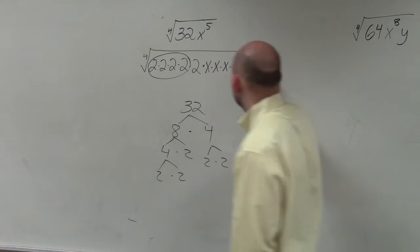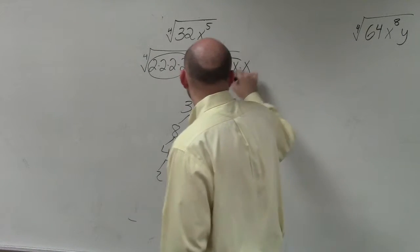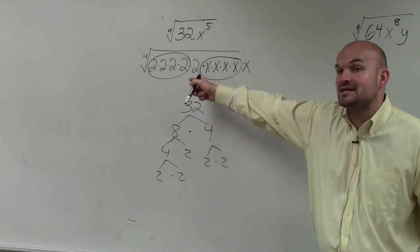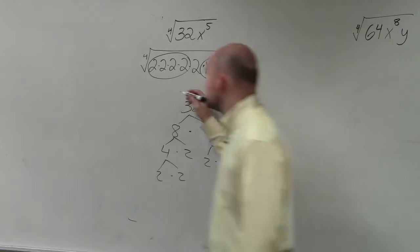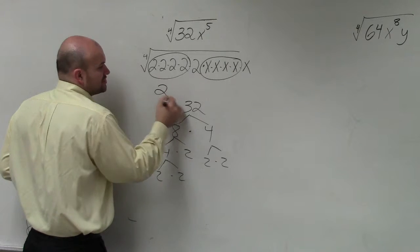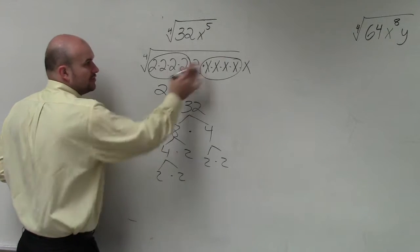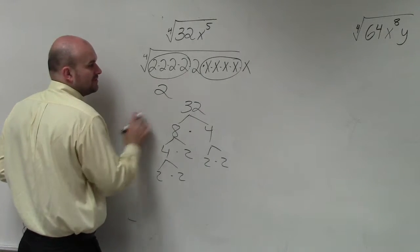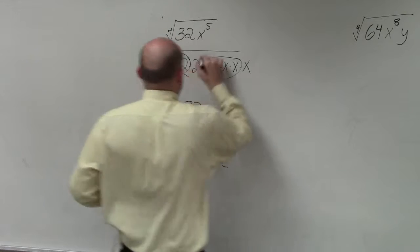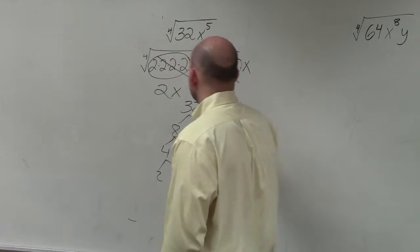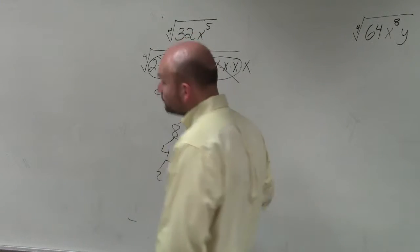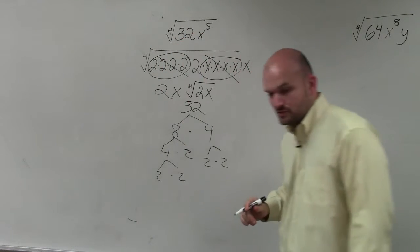I have groups of four here, and I have a group of four here. You can obviously see I'm multiplying two by itself four times. So the fourth root of two multiplied by itself four times is just two. The fourth root of x multiplied by itself four times is just x. And then what am I left over with? The fourth root of 2x.